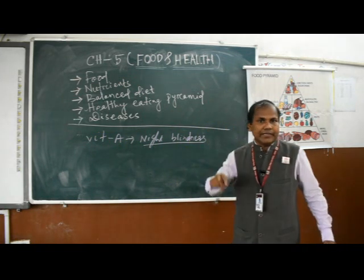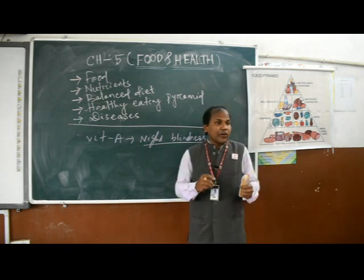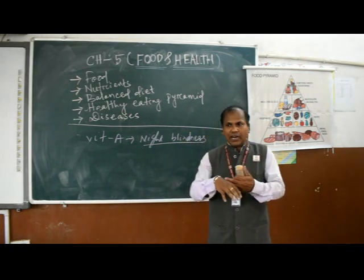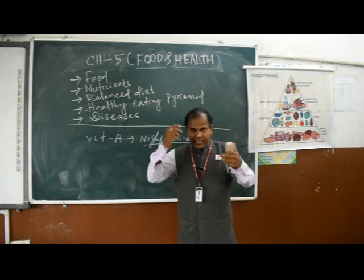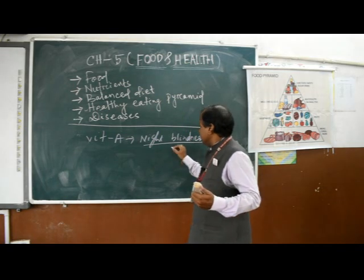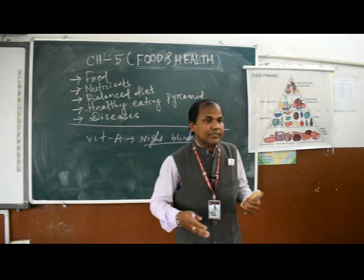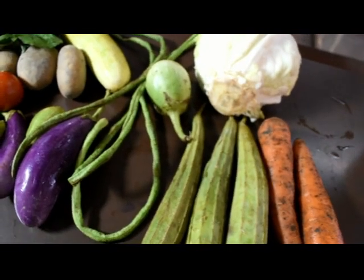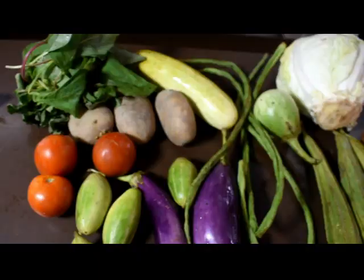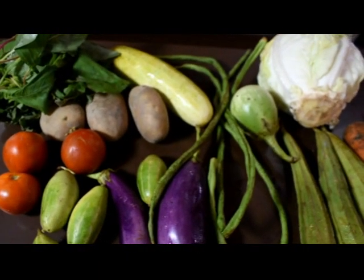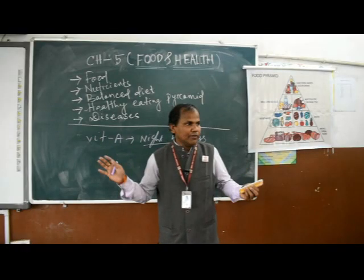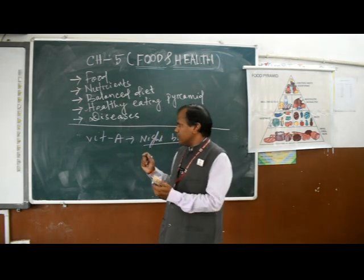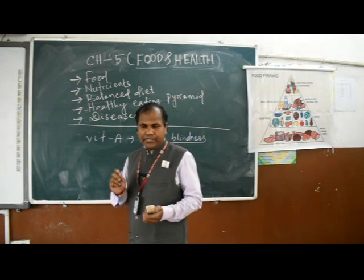The symptoms of night blindness are: the child is unable to see in dim light, the skin becomes very scaly, eyes look very dull, and hair becomes light and thin. To avoid Vitamin A deficiency disease, take all types of green vegetables and green leafy vegetables — generally called saag — as well as carrot, tomato, and radish. These foods can help you avoid night blindness.